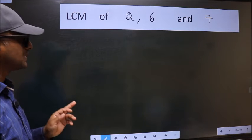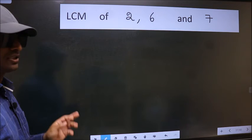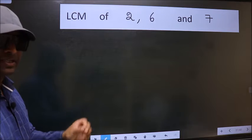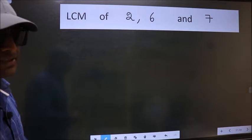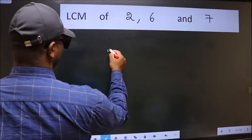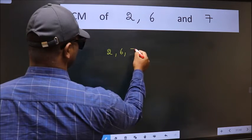LCM of 2, 6 and 7. To find this LCM, we should frame it in this way: 2, 6, 7.